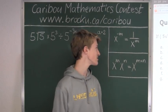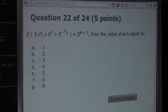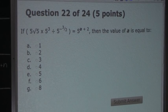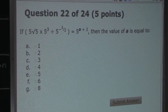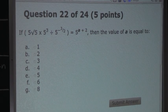So, the question is: If 5 times the square root of 5 times 5 to the power of 3, divided by 5 to the power of minus 3 over 2, equals 5 to the power of a plus 2, then the value of a is equal to what?